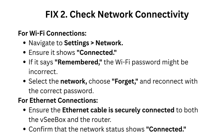Fix 2: Check network connectivity. For Wi-Fi connections, navigate to Settings > Network and ensure it shows Connected. If it says Remembered, the Wi-Fi password might be incorrect — select the network, choose Forget, and reconnect with the correct password. For Ethernet connections, ensure the cable is securely connected to both the VC box and the router, and confirm the network status shows Connected.